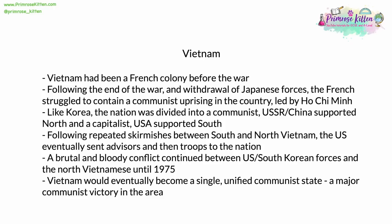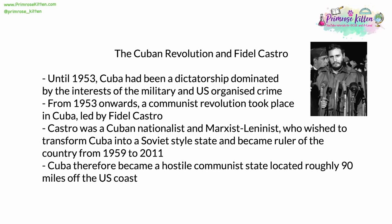Eventually, after 1975 and the withdrawal of US troops, Vietnam would become a single unified communist state — a major communist victory in the area, especially for China. Until 1953, Cuba had been a dictatorship dominated by the interests of the military and US-organized crime, the mafia in particular. From 1953 onwards, a communist revolution gradually gathered pace in Cuba, led by Fidel Castro, who would later become the ruler of a communist Cuba. Castro was a Cuban nationalist and a Marxist-Leninist communist who wished to transform Cuba into a Soviet-style communist state. He became ruler of the country from 1959 through to 2011.